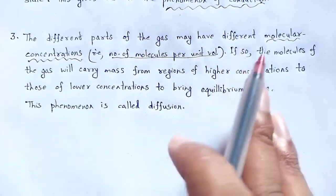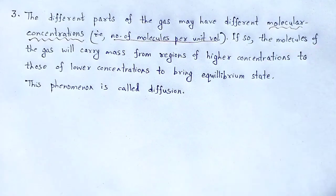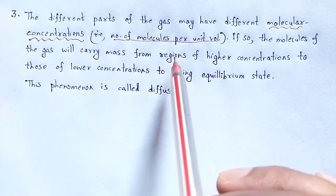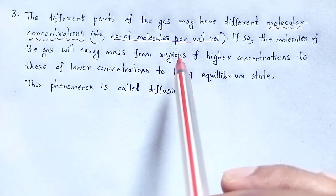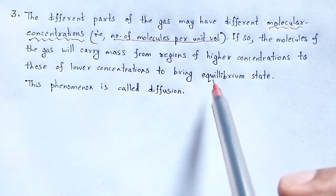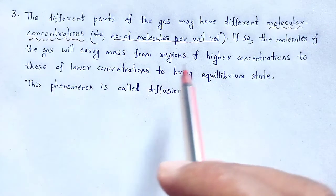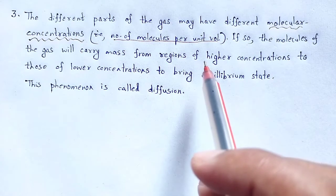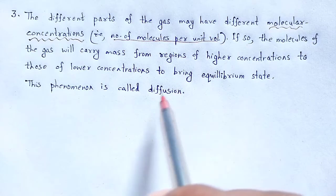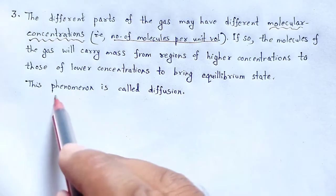Third, if the different parts of the gas have different molecular concentrations — that is, the number of molecules per unit volume — the molecules of the gas will carry mass from regions of higher concentration to those of lower concentration to bring the state to equilibrium. This phenomenon is called diffusion.